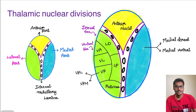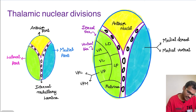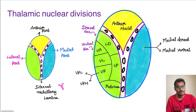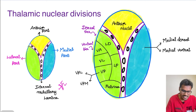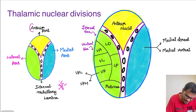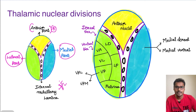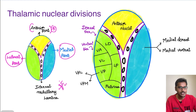Coming to the thalamic nuclear divisions, the thalamus is primarily divided into three divisions. There is a Y-shaped structure in the middle formed of white axons that divides the thalamic nucleus into three different parts: the frontmost is the anterior division, then the medial part, and on the lateral side the lateral part. These are the three primary divisions of the thalamic nucleus, which is further divided into many nuclei.